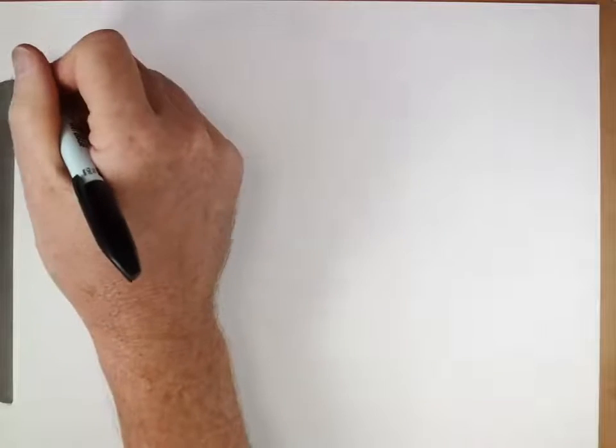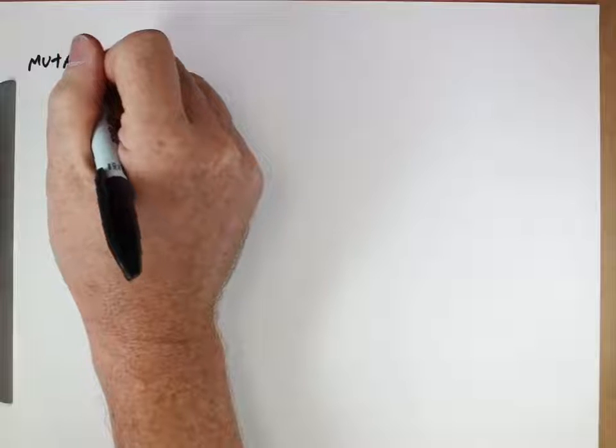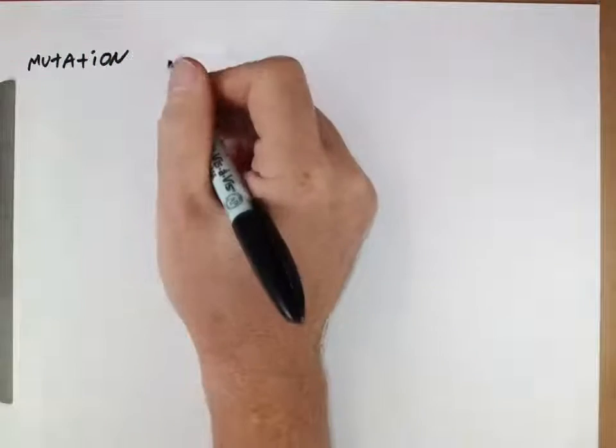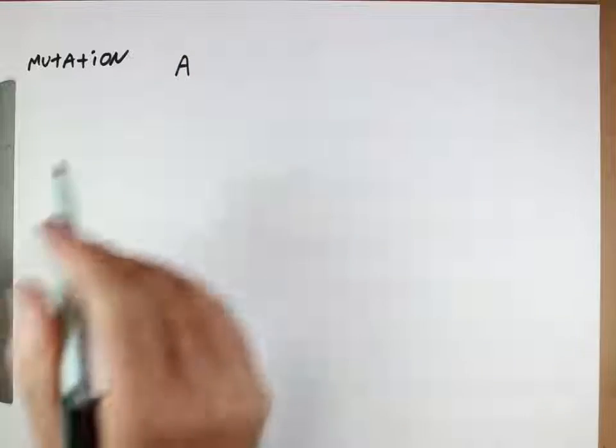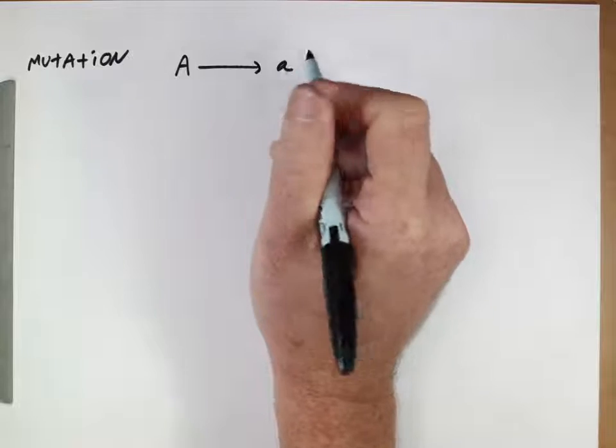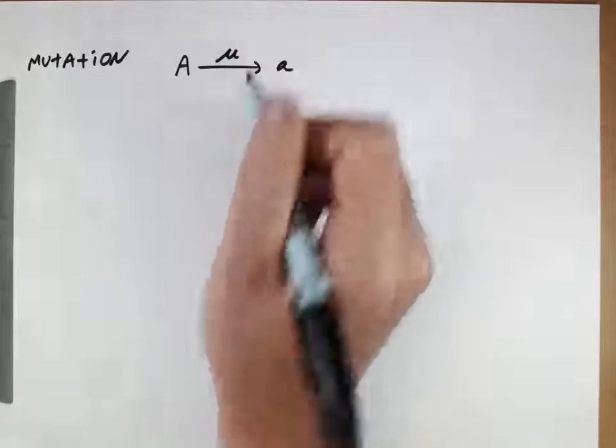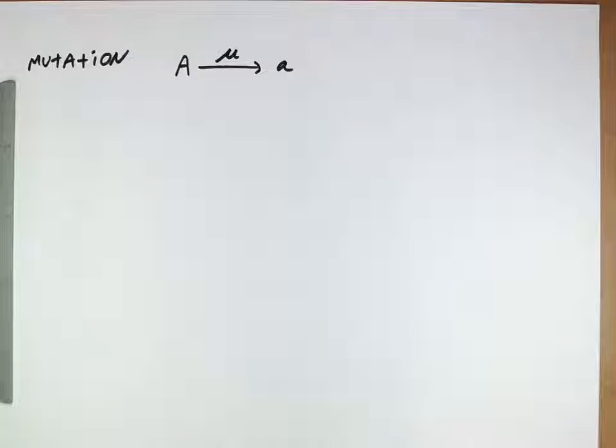Now we'll begin thinking about what happens when that second assumption in Hardy-Weinberg is violated. In other words, let's think about the situation when there is mutation. So mutations we'll be modeling in one direction, from a capital A allele to the lowercase allele, and they'll happen with probability μ, this Greek letter. That's the per generation per allele mutation rate.